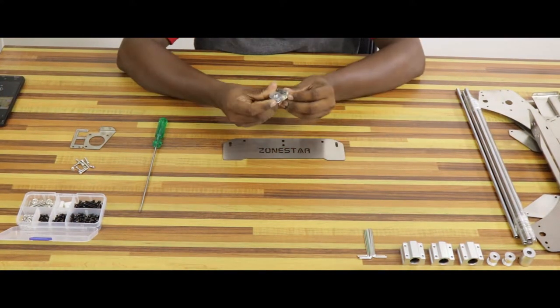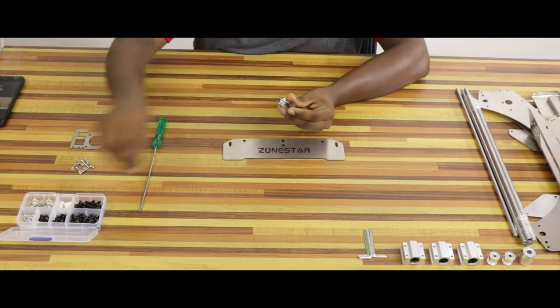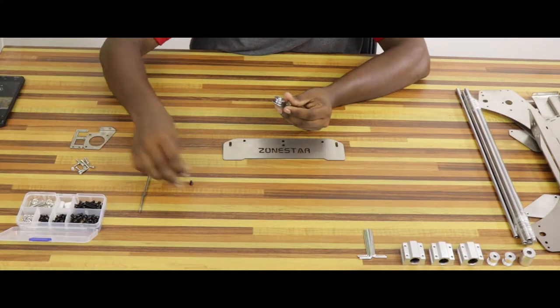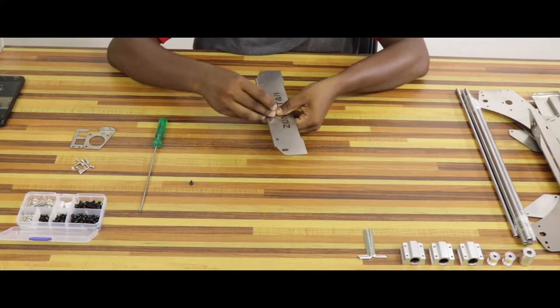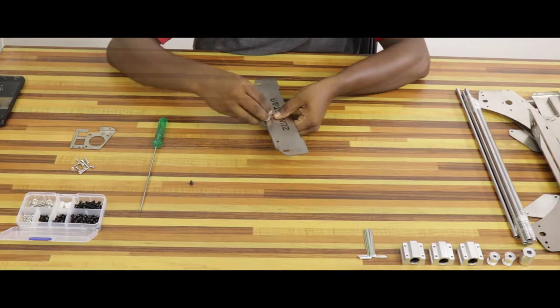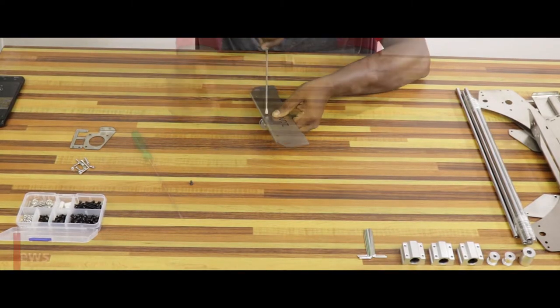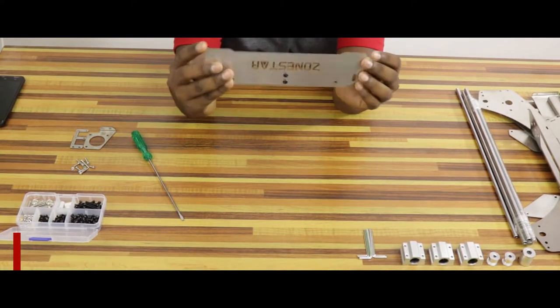Let's start with the front base frame assembly. The front side base frame is precision milled with the name of the manufacturer. We have to fix the Y-axis belt pulley with the frame. We can use two M4 6mm screws from the screws box to fix it.